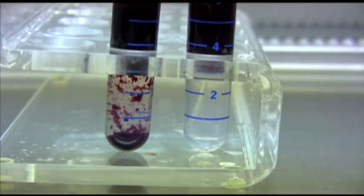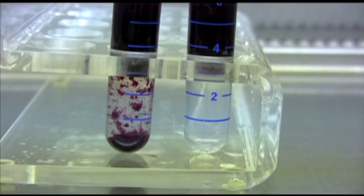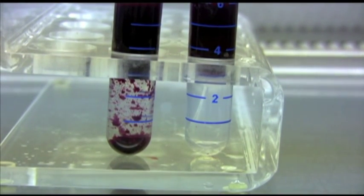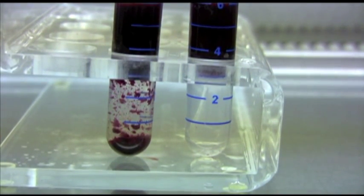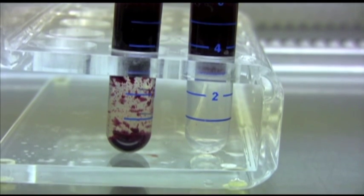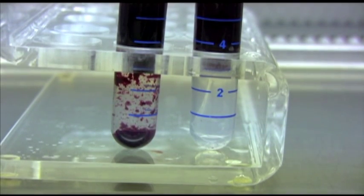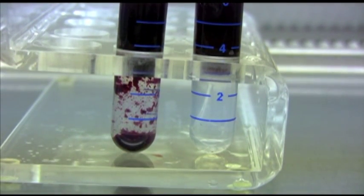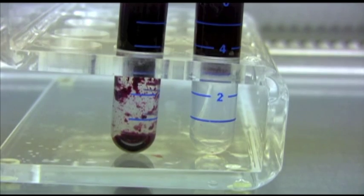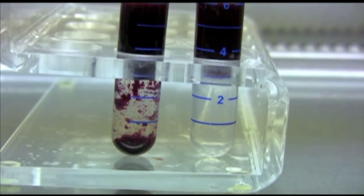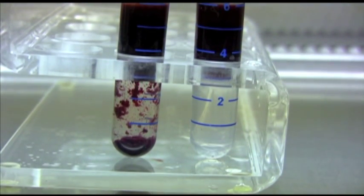The AccuSpin system Histopac 1077's unique design greatly increases the yield of lymphocytes and other mononuclear cells compared to using Histopac 1077 alone. Within seconds of adding whole blood to the tube containing Histopac alone, the whole blood begins precipitating into the Histopac 1077, while in the AccuSpin tube, the blood and Histopac 1077 remain separated until centrifugation begins.